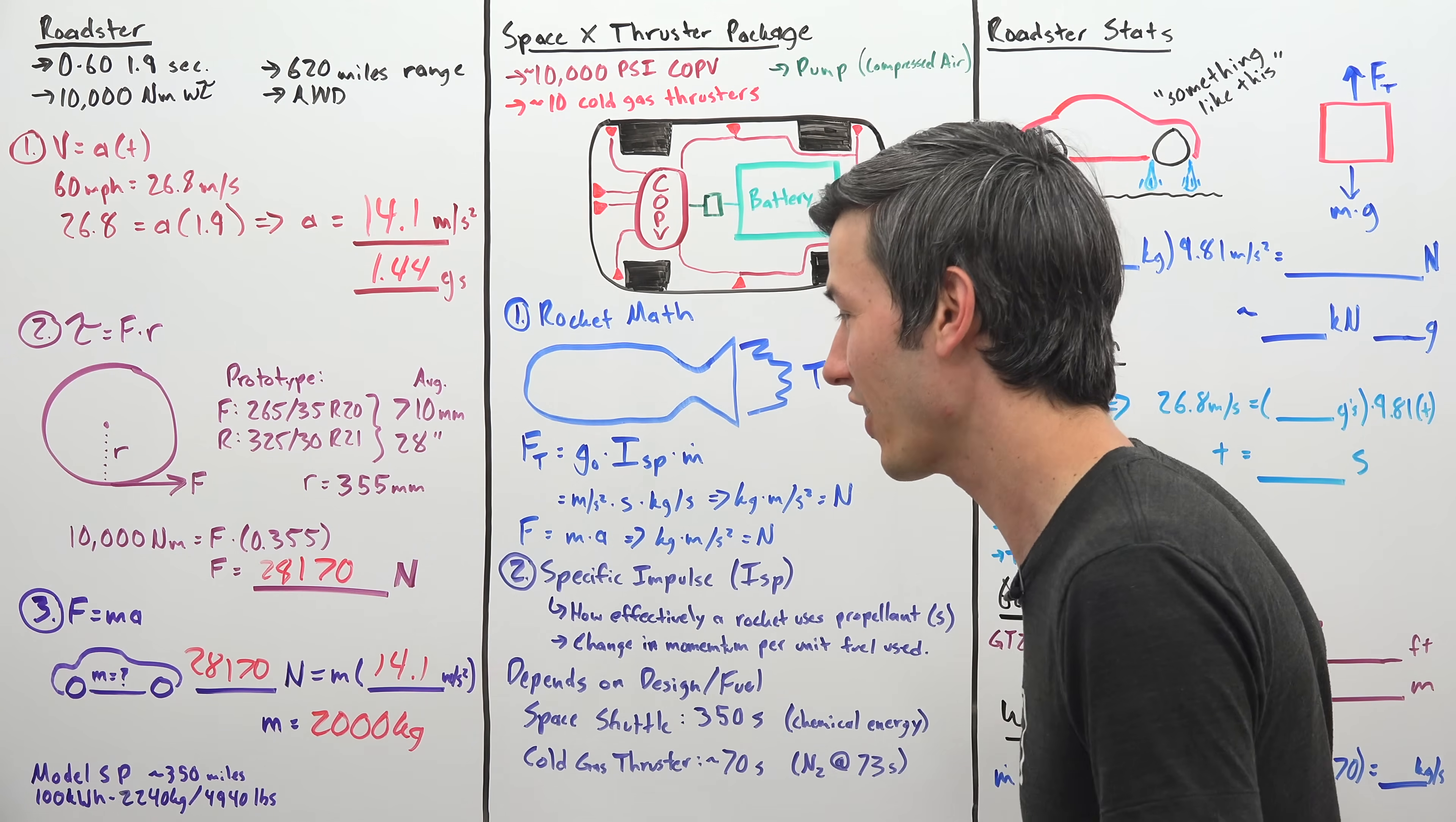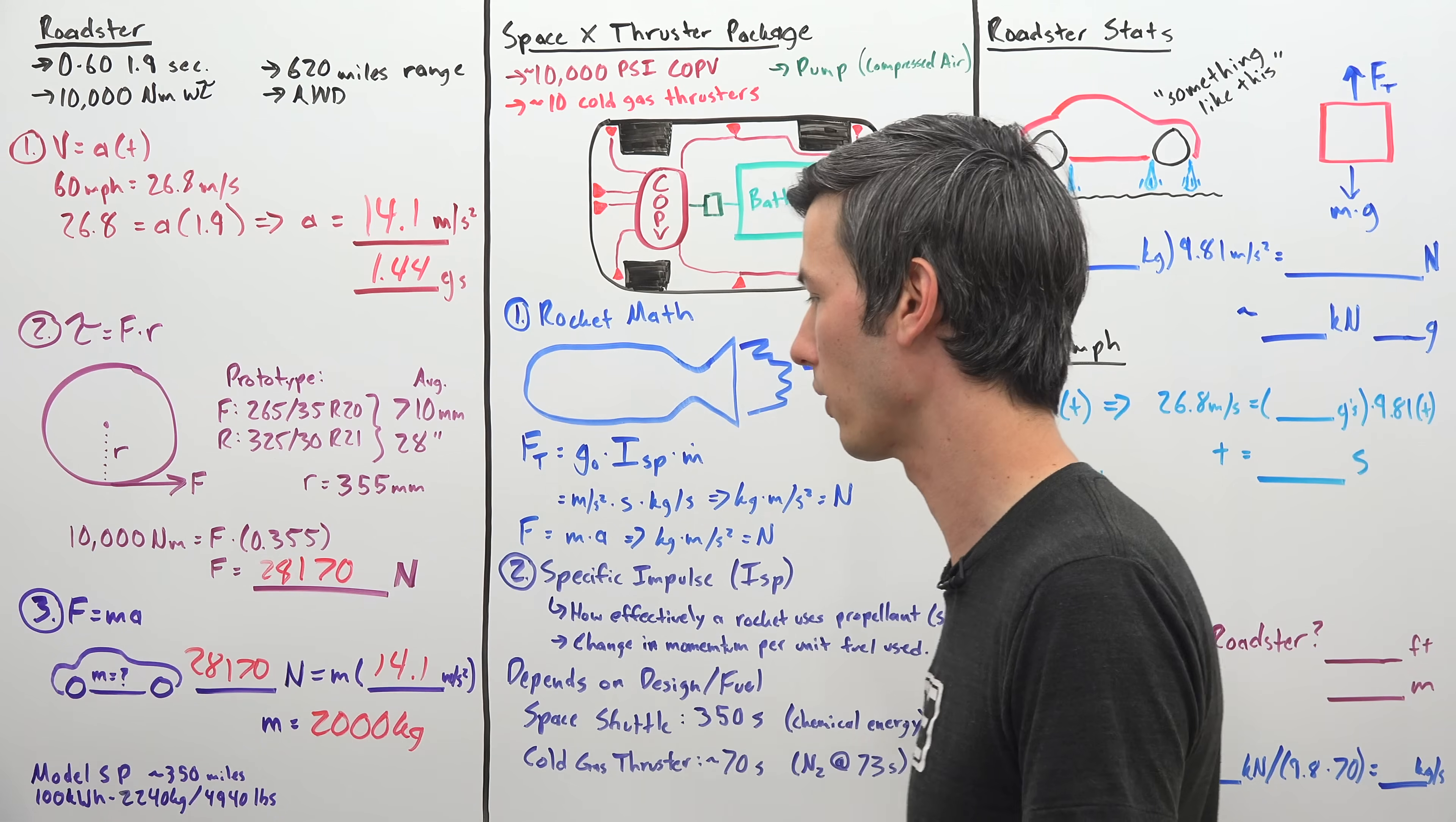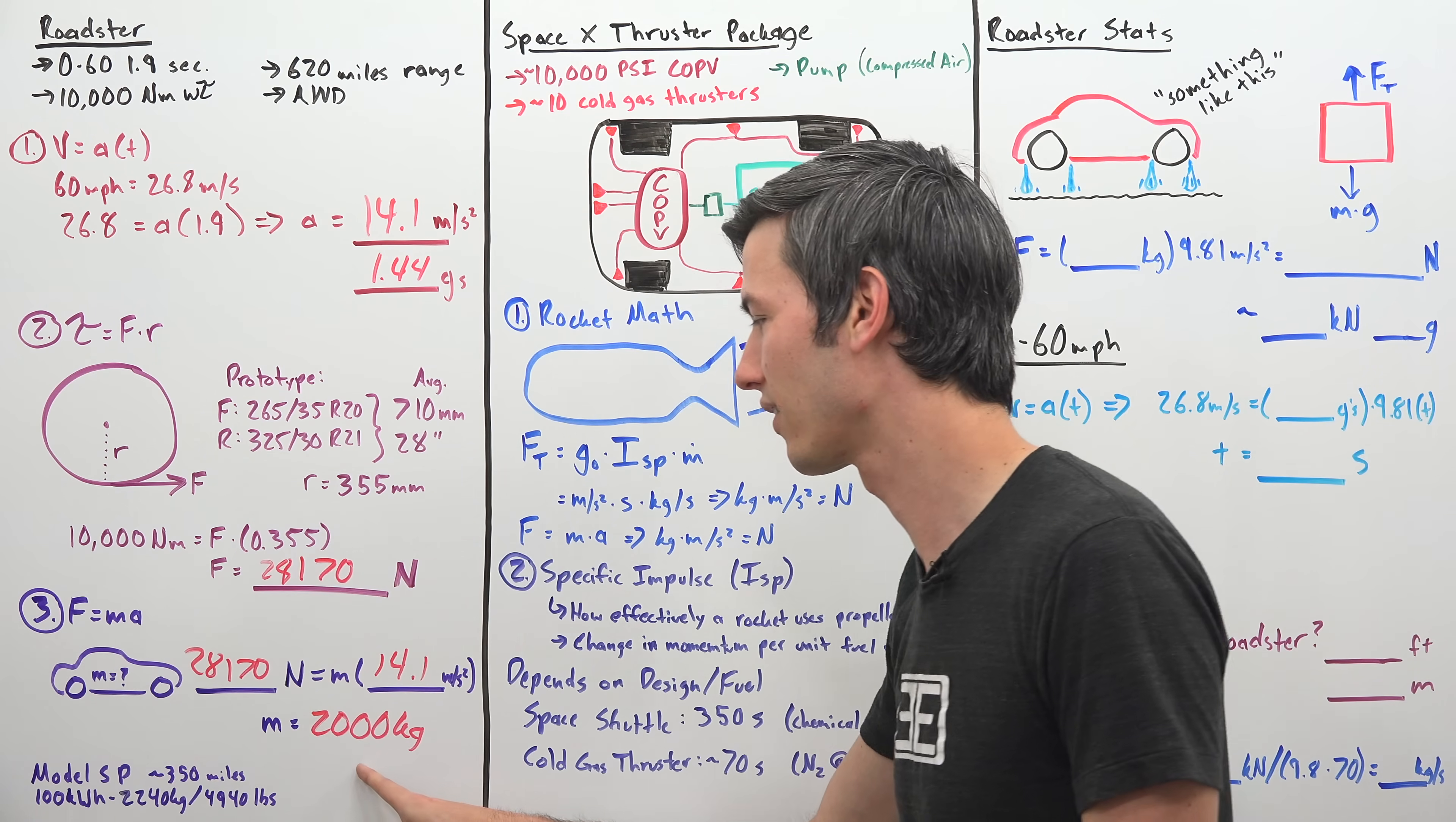Now, do I think it's actually going to weigh just 2,000 kilograms? I do not, and reason being is that the Model S, which has a 100 kilowatt hour battery pack, the performance version is good for about 350 miles. This is claiming that it's going to be good for 620 miles, significantly longer range, and that Model S with the 100 kilowatt hour battery pack weighs in at 2,240 kilograms, or close to 5,000 pounds. So this is 4,400 pounds, 500 pounds lighter than that Model S with significantly more range. So what in reality I think is going to happen is this car is going to be heavier than 2,000 kilograms, and it's actually going to have a higher wheel torque than 10,000 newton meters. In fact, the Model S has about 11,000 newton meters of wheel torque, which I calculated in a previous video. So I would assume this number will be larger and this number will be larger as well.